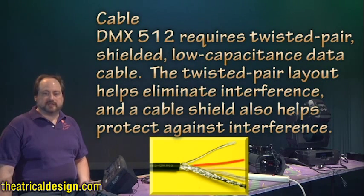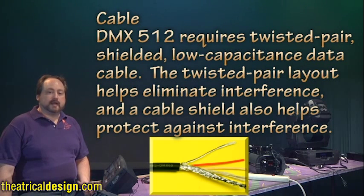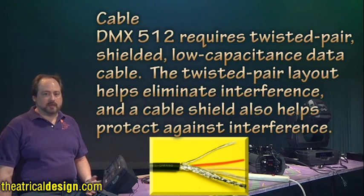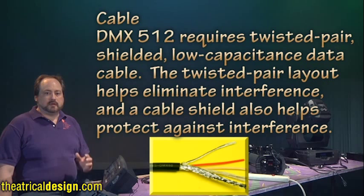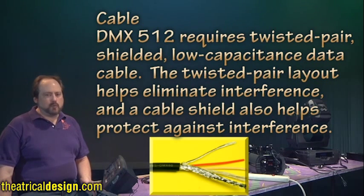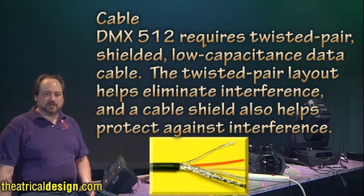Cable: DMX 512 requires twisted pair shielded, low-capacitance data cable. The twisted pair layout helps eliminate interference, and a cable shield also helps protect against interference. Many people try substituting cheaper balanced audio cable or microphone cable, with inconsistent results. Audio cable is not designed to support the signal rate of the high-speed DMX protocol. Although it may work over short distances, it is highly vulnerable to interference and degradation, leading to unstable results.